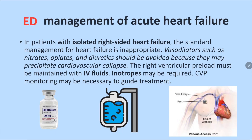In isolated right heart failure, standard heart failure management may not be appropriate — vasodilators, nitrates, opiates, and diuretics can cause cardiovascular collapse and must be used cautiously. Right ventricular preload must be maintained with IV fluid. In suspected right ventricular failure — for example, right ventricular infarction in inferior MI — give IV fluid if in shock. Inotropes may be required if there is no response, and central venous pressure should be monitored to guide treatment.